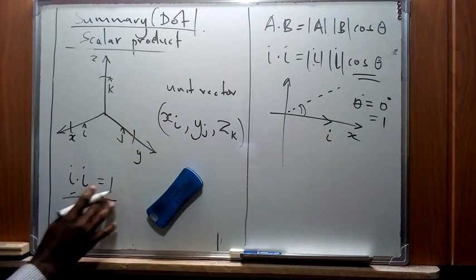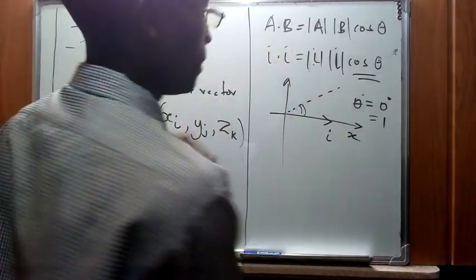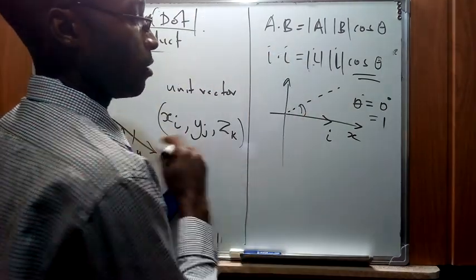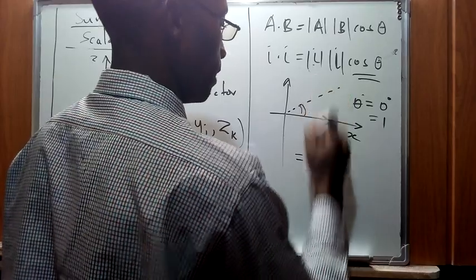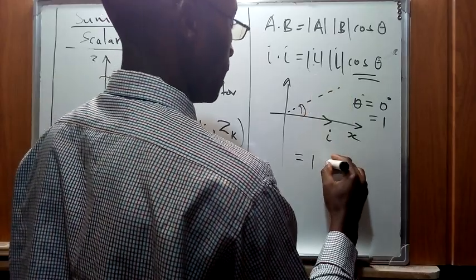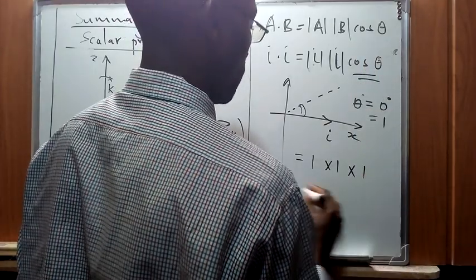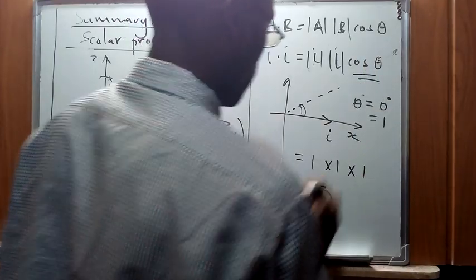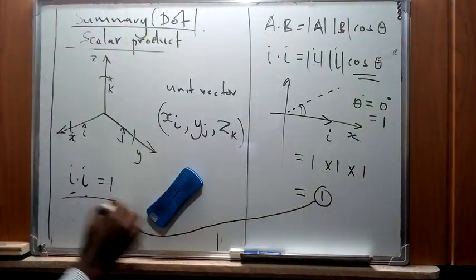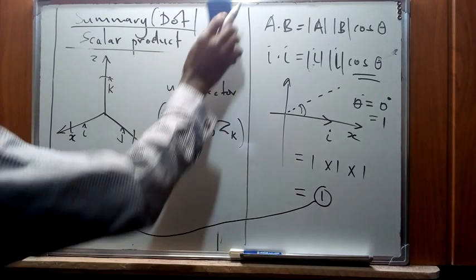So basically, the modulus of one is one, and the modulus of one is one, the cosine of zero is one. So therefore, this is going to give us a product of one, which basically confirms our rule that we have already stated here.